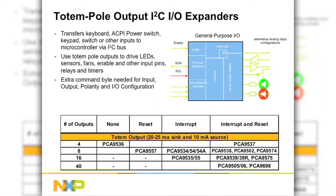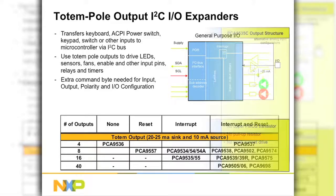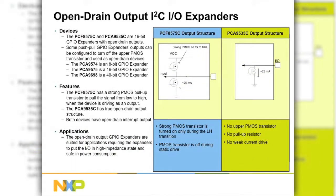Though slightly more complex, these newer devices provide greater flexibility for the designer and offer it in smaller packages. Open drain outputs have no upper PMOS transistor and are only capable of sinking current. The PCA9535 has no pull-up transistor, but the PCF8575 has a pull-up transistor which is turned on only during the rising edge transition and for only half a clock cycle to help pull the line high.